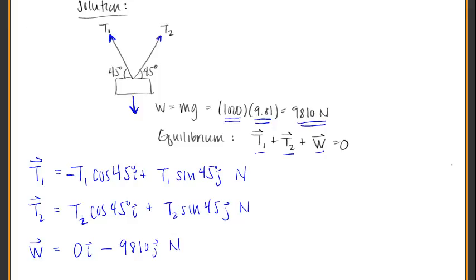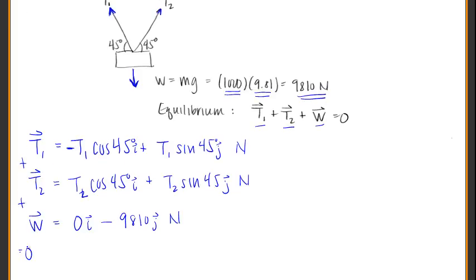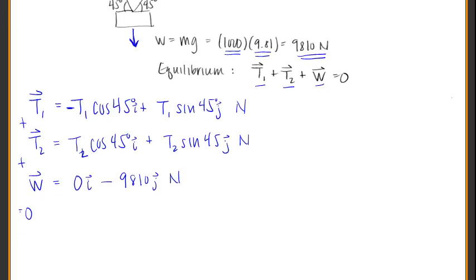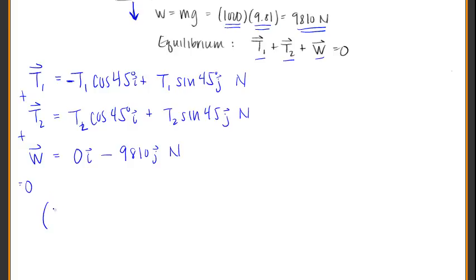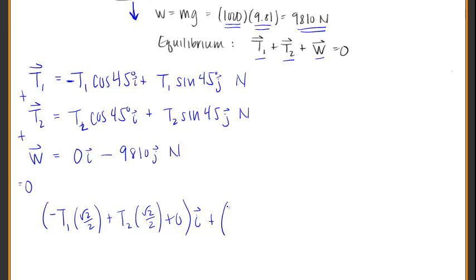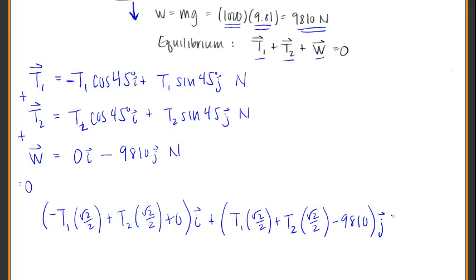The sum T1 plus T2 plus W needs to equal zero. Adding up all the i portions: negative T1 times square root of 2 over 2 plus T2 times square root of 2 over 2 plus 0 times the i unit vector. Then the j portions: T1 times square root of 2 over 2 plus T2 times square root of 2 over 2 minus 9,810 times the j unit vector — all of that equals zero.